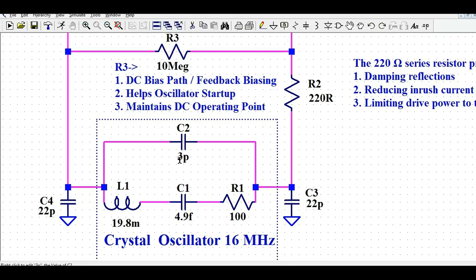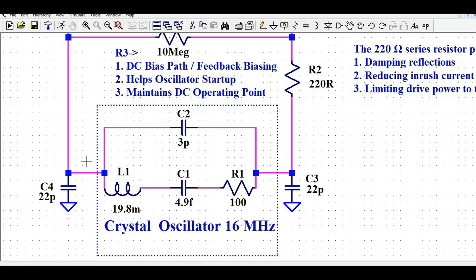To drive the crystal oscillator you need to connect load capacitances. C3 and C4 are the load capacitances, each with a value of 22 pF. This is how you model the crystal oscillator in LTSpice — using the parasitic components L, C, R, plus the load capacitances C3 and C4.